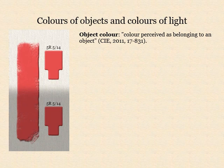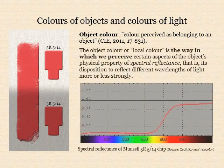Colours perceived to belong to an object and specifiable in this way are called object colours. An object colour is the way in which we perceive certain aspects of an object's physical property of spectral reflectance, or its disposition to reflect this or that sort of rays more copiously than the rest, as Newton called it.